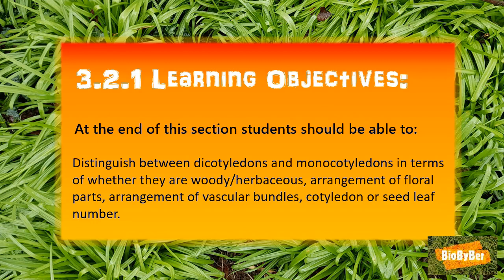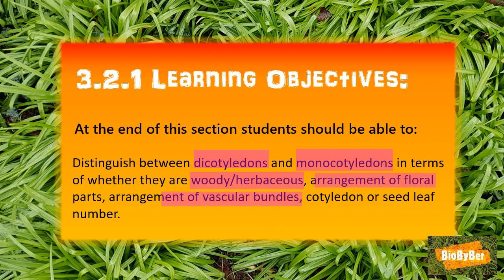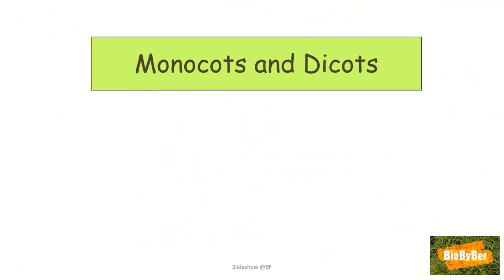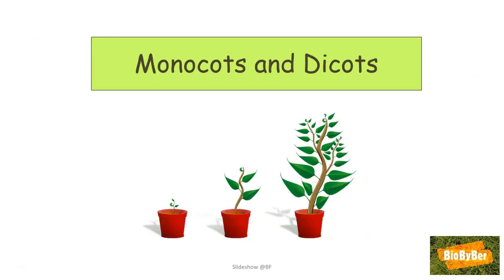What does this actually mean? What are we trying to understand? You have to be able to distinguish between dicotyledon and monocotyledon plants, focusing on the differences between their stems — whether they are woody or herbaceous — the arrangement of their flower parts, the arrangement of their vascular bundles, and the number of seed leaves that they have. Let's try to understand the organization of the parts of the flowering plant by looking at monocots and dicots.